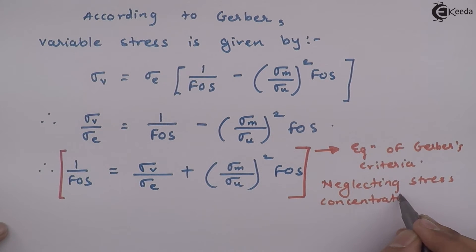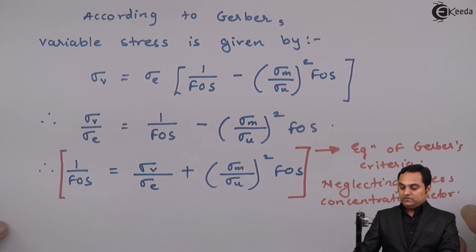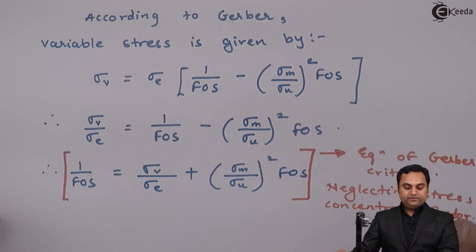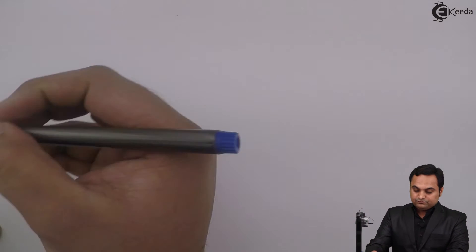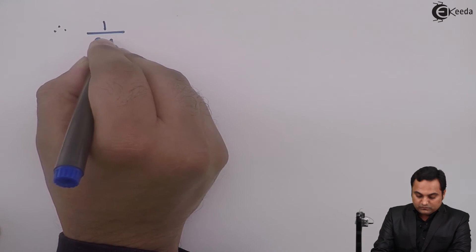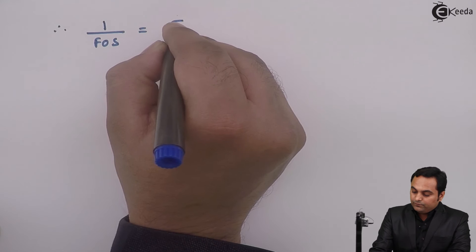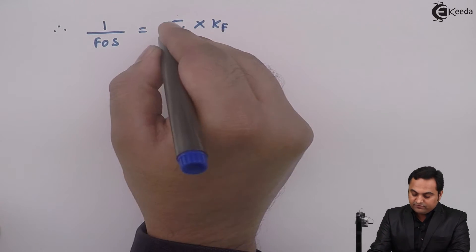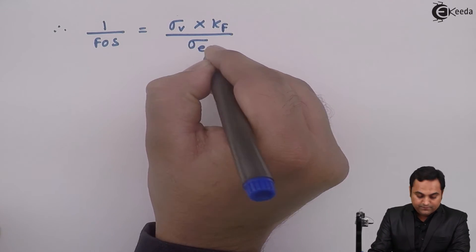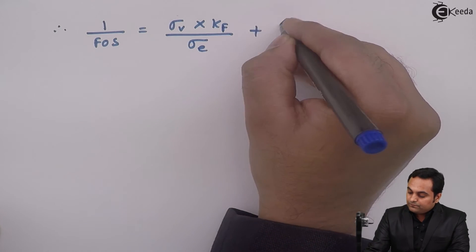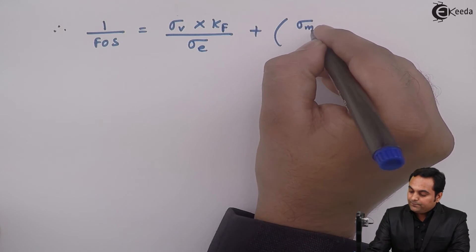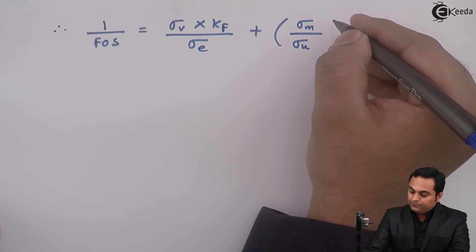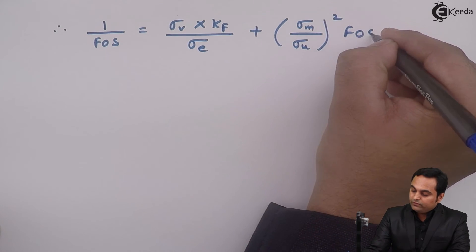When we consider the stress concentration factor, the equation becomes: one over FOS equals Sigma V multiplied by K_F over Sigma E, plus (Sigma M over Sigma U) whole squared multiplied by FOS, where K_F is the fatigue stress concentration factor.